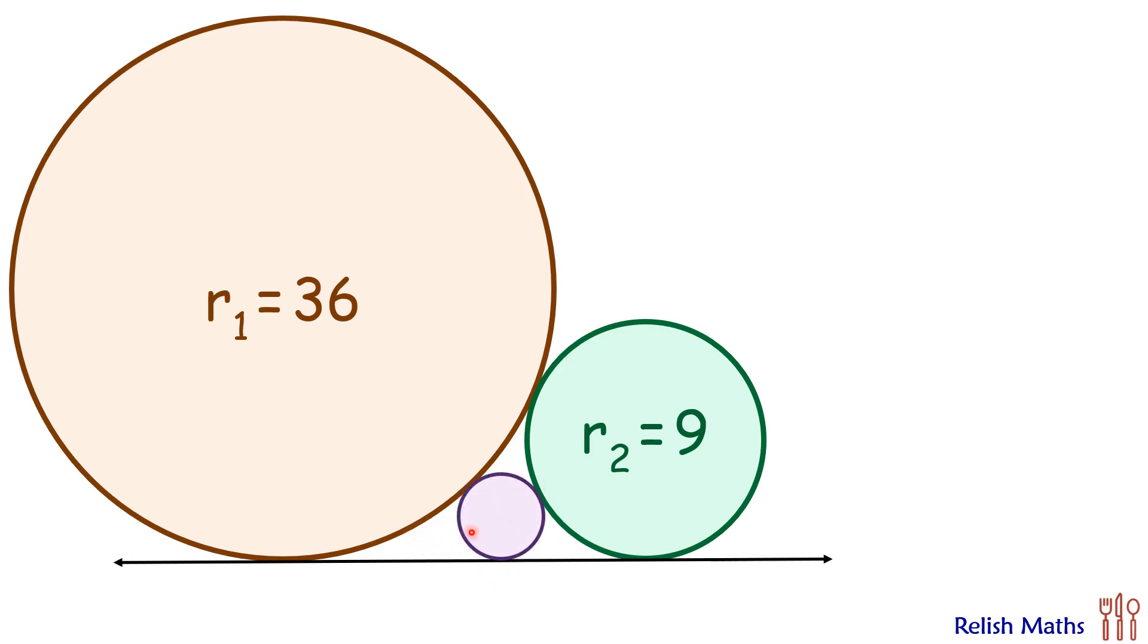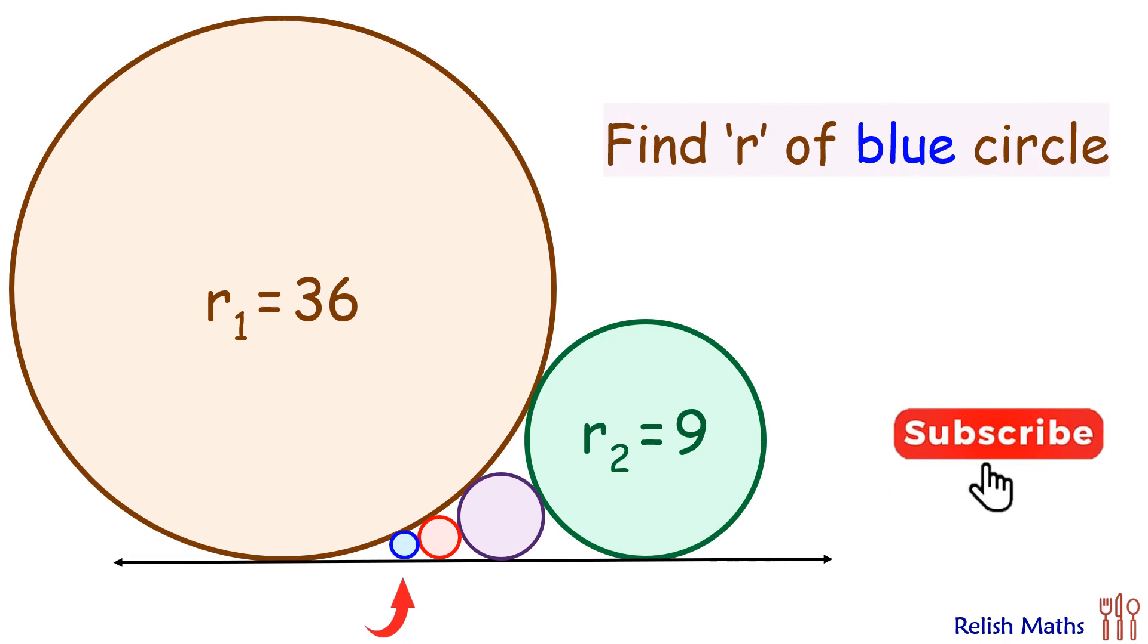Now we are putting one more additional fourth circle here which is tangent to these two circles, and following this series we are putting one more fifth circle here. Question is, using this data we have to find the radius of the blue circle.